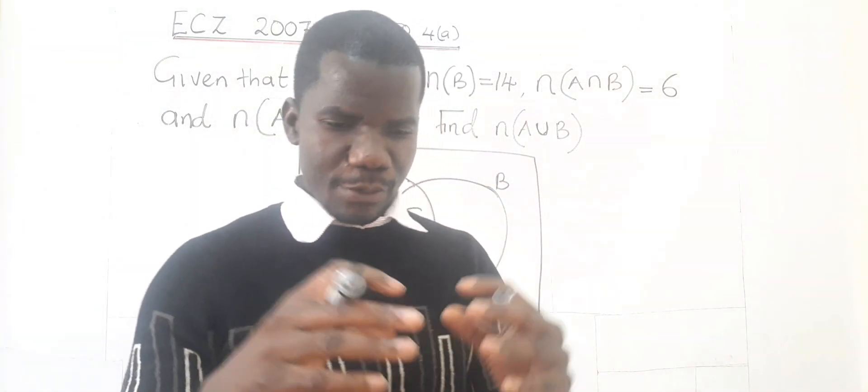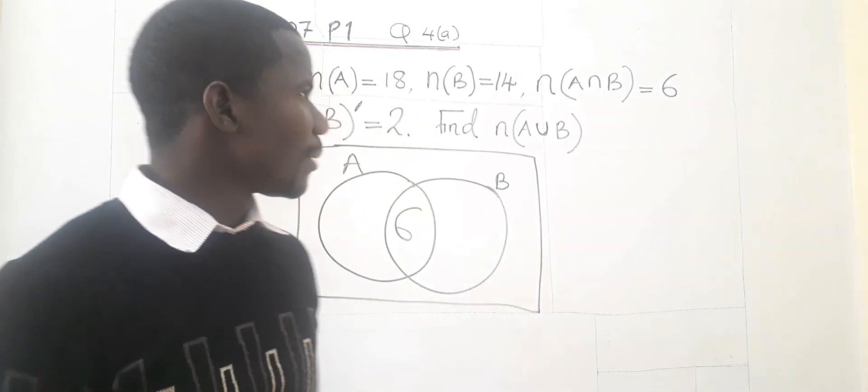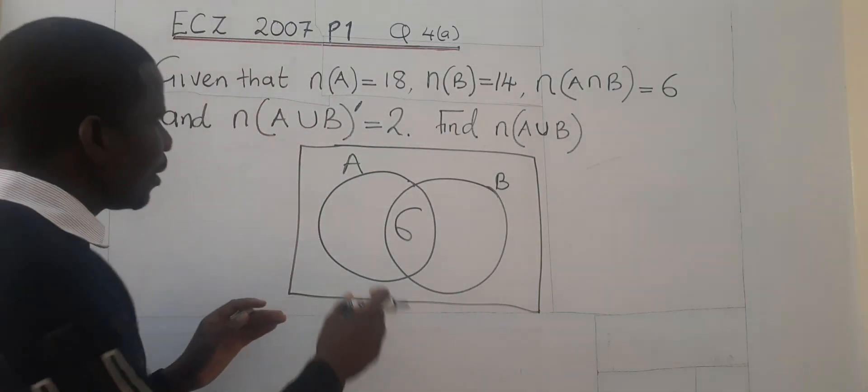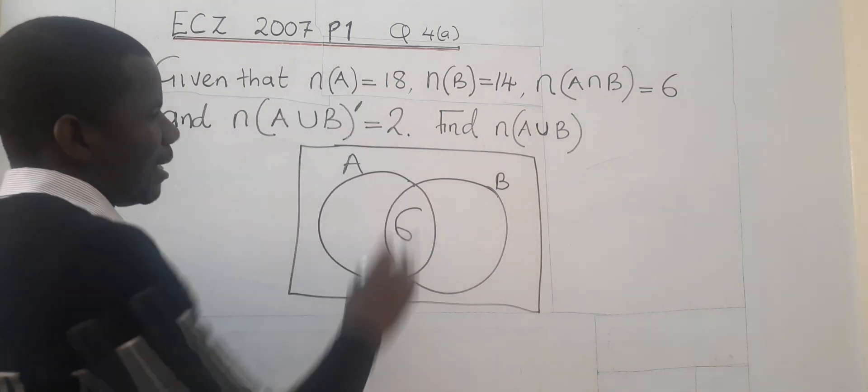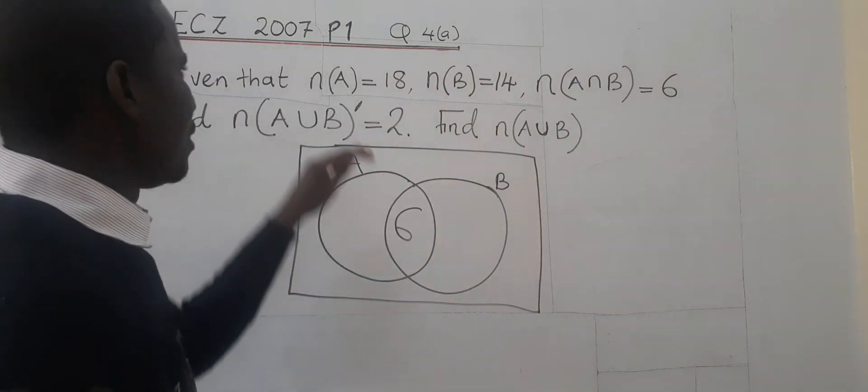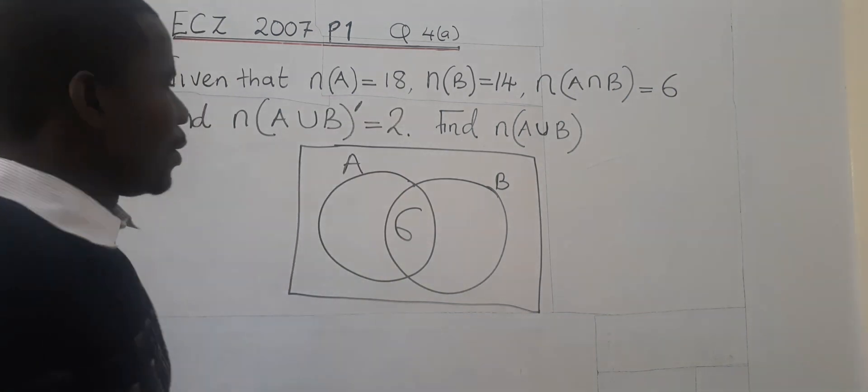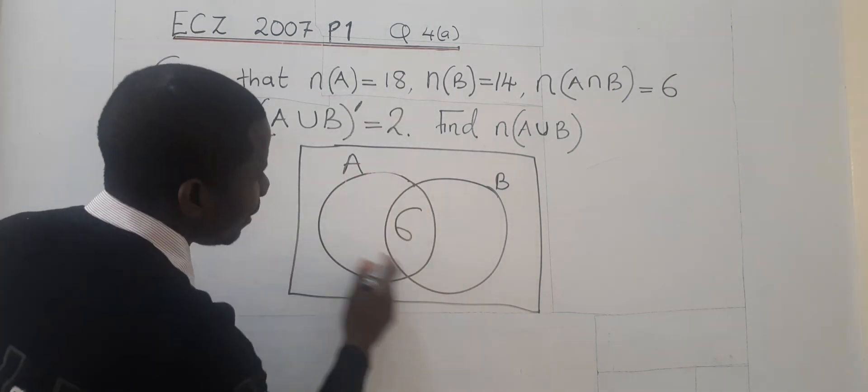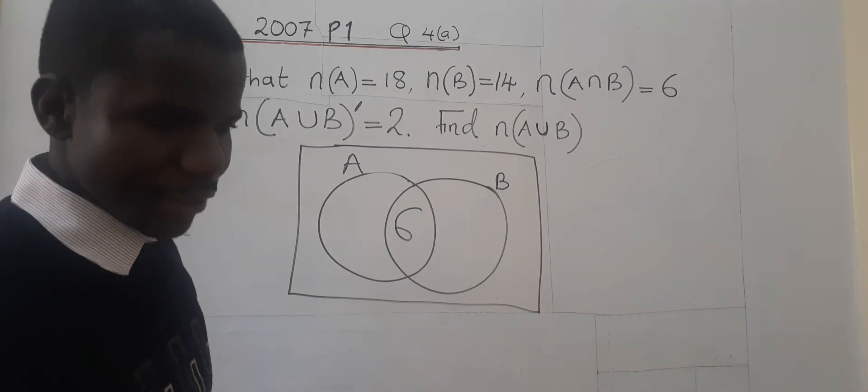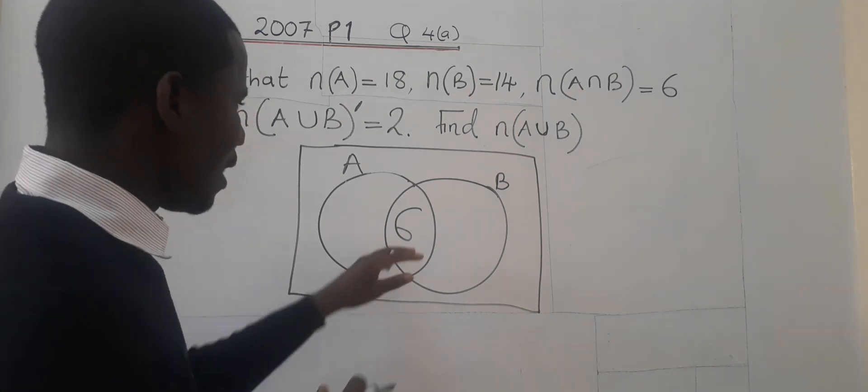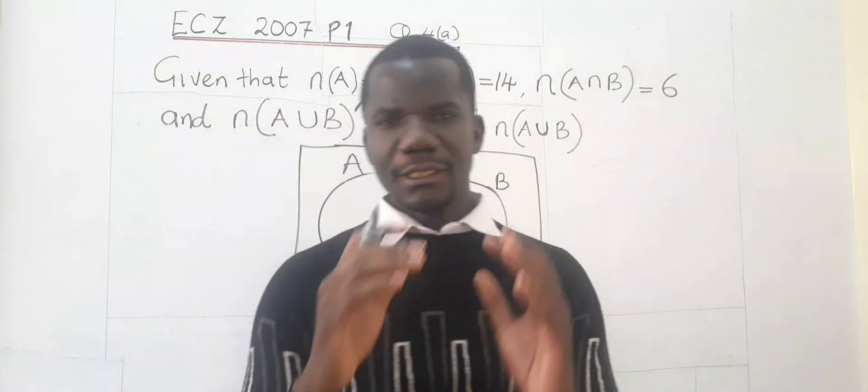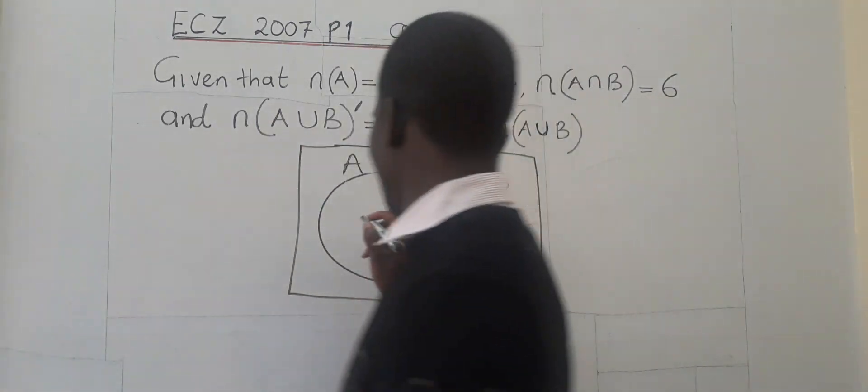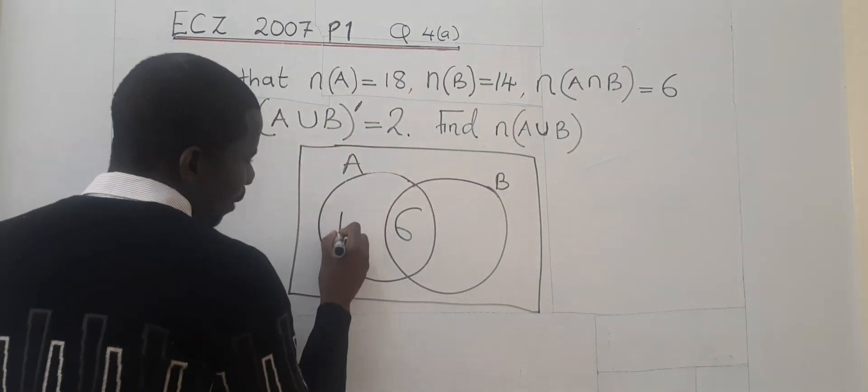So always we are supposed to start from the intersection. Are we together? Then now we come this side. The number of elements in A, how many are they? 18. The entire A should give us 18 elements. So from the 18, we already have 6. So we are going to subtract the 6 from 18. What are we going to remain with? We are going to remain with 12.